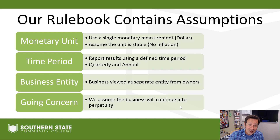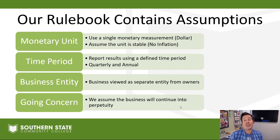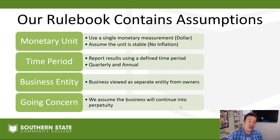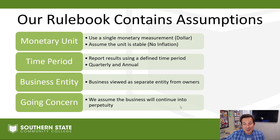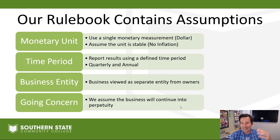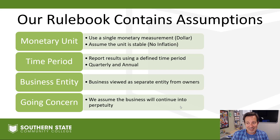And finally, we have a going concern assumption — the assumption that the business will continue on into perpetuity, which is a fancy word that means forever. We're assuming the business will continue on and on. The reason we make that assumption is for valuation purposes. If we know the business is going to go under within the next month, we'd have to make some tweaks to the valuation of things on our balance sheet and our assets. But for now, just be aware that we're assuming the business is going to be around for a while and isn't going anywhere anytime soon.